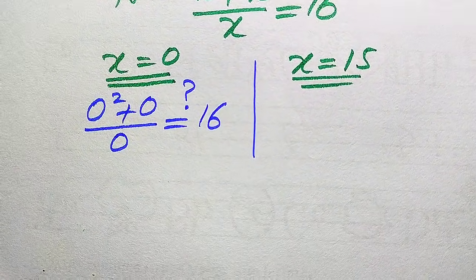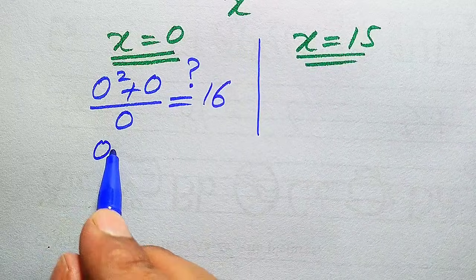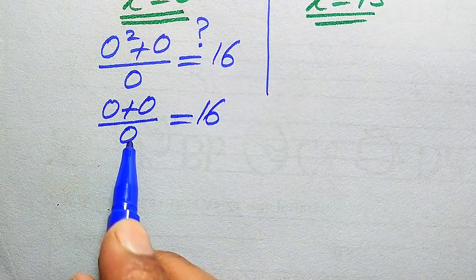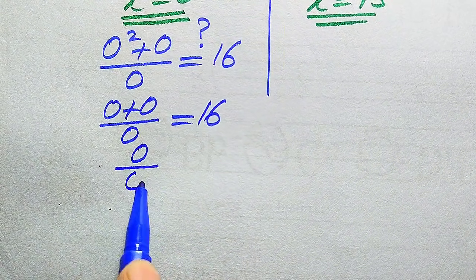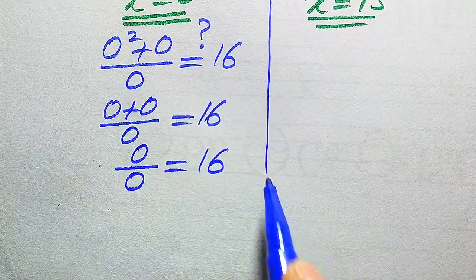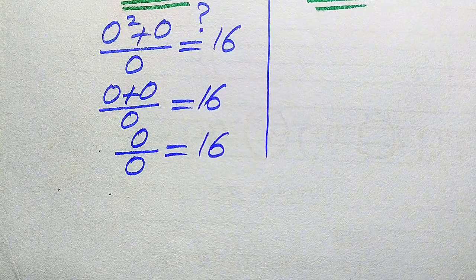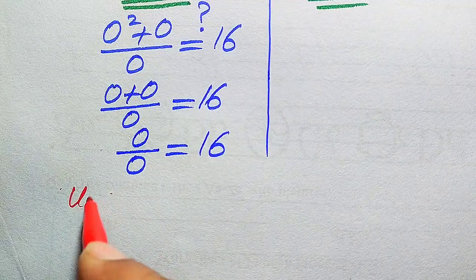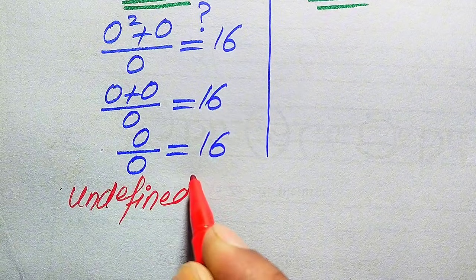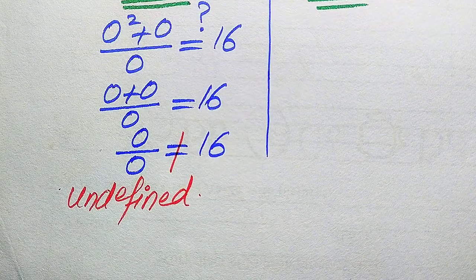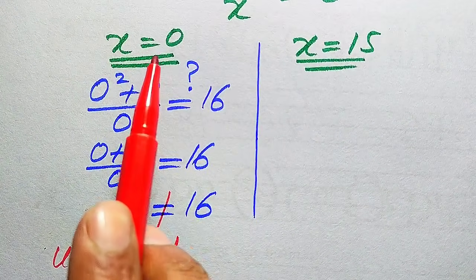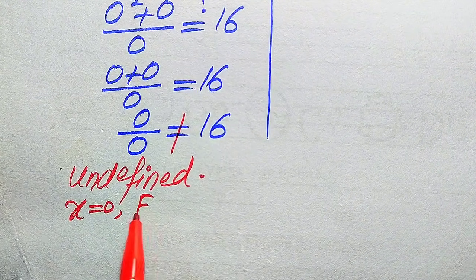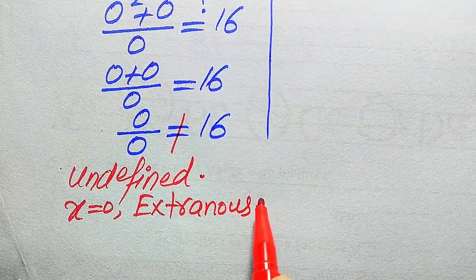We check whether both sides are equal. We get 0 plus 0 over 0, which is the 0/0 indeterminate form — in other words, it is undefined. Since the left hand side is undefined, both sides are not equal, meaning x equals 0 does not satisfy the original equation. Therefore x equals 0 is an extraneous root.